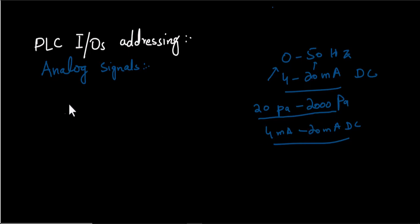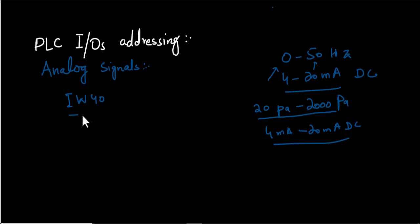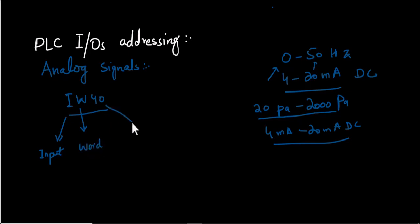We will address the analog channel something like this: IW 40. If we address the analog input channel as IW 40, it means: I means input, W means word, and 40 is the channel number.